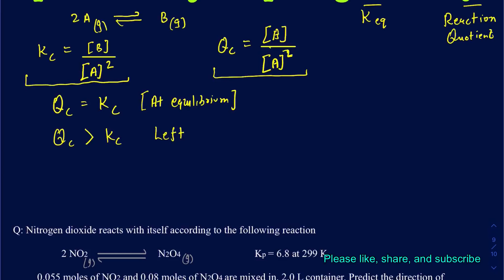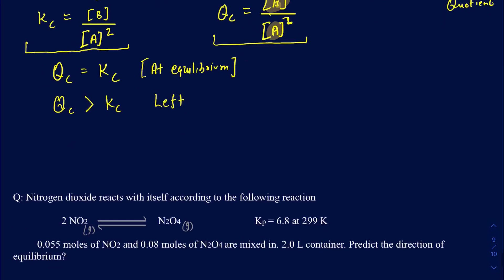In the process, you will lose some of your products. In this particular case, I would lose some of my B, and I will make some of that A until your Qc becomes equal to the Kc. The opposite can be said as well, where your Qc is actually less than the Kc.